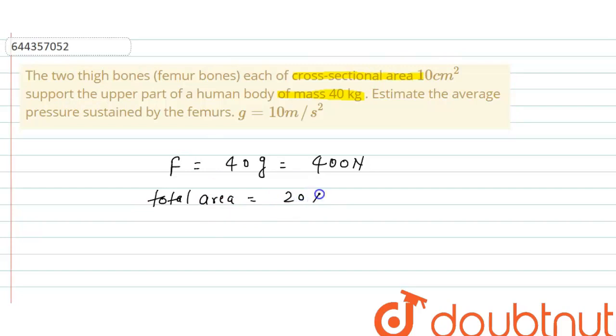So 20 into 10 to the power minus 4 meters square. This is the total area.